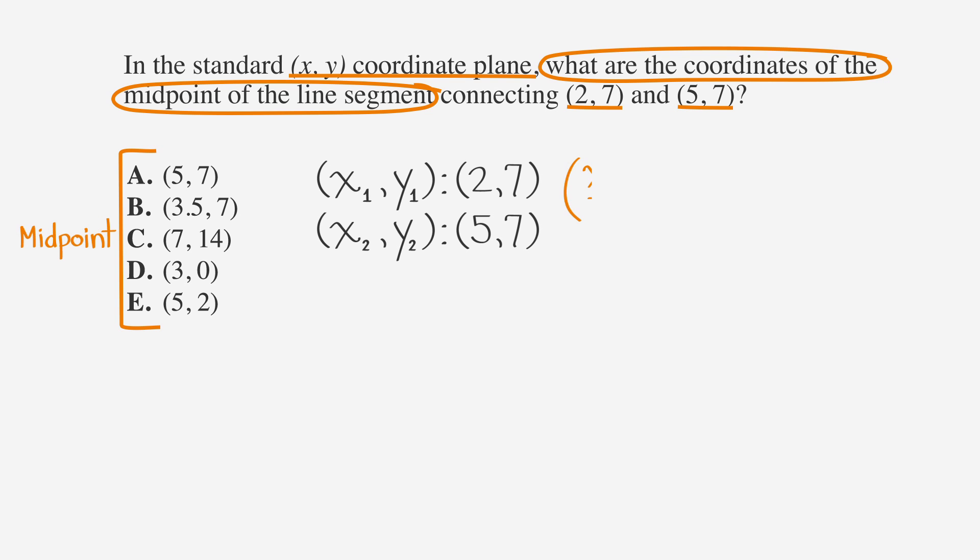Now use the midpoint formula, x1 plus x2 over two, y1 plus y2 over two, and we get two plus five over two, seven plus seven over two.